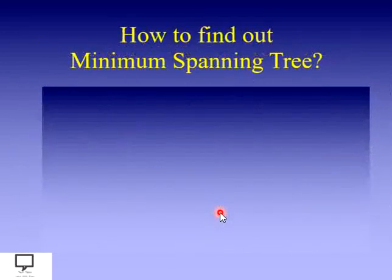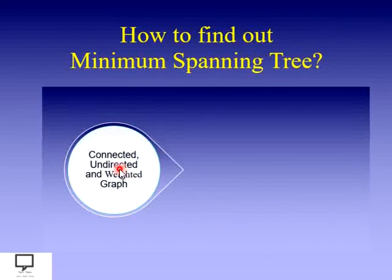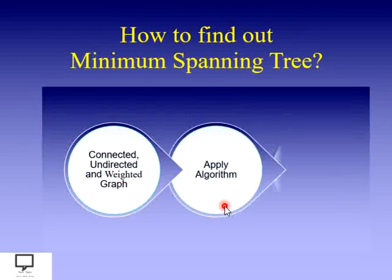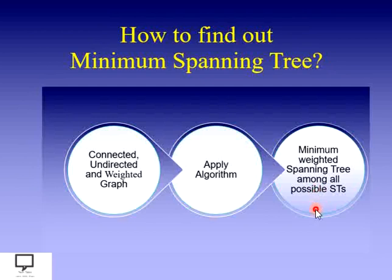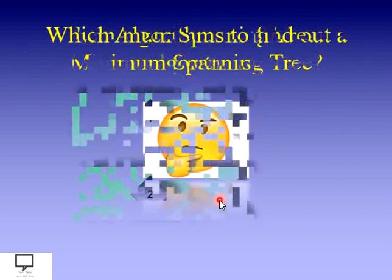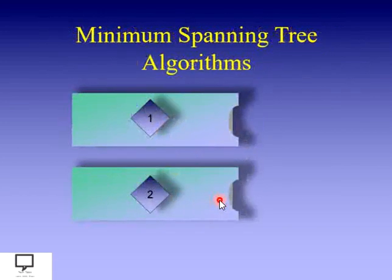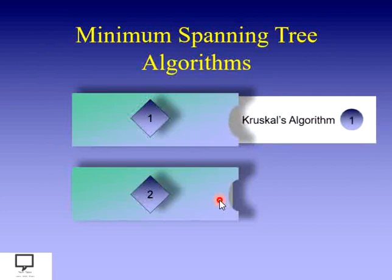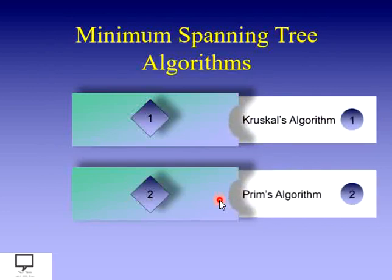How to find out the minimum spanning tree? First, we take the input as a connected, undirected, and weighted graph, then apply an algorithm, and the output will be a minimum spanning tree. There are two algorithms to find a minimum spanning tree: Kruskal's algorithm and Prim's algorithm. I have already explained Kruskal's algorithm with an animated solved example in my previous video — a shortcut link is provided in the top right corner.